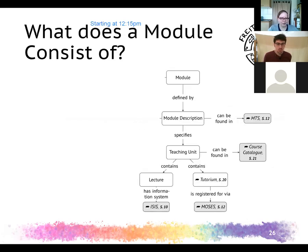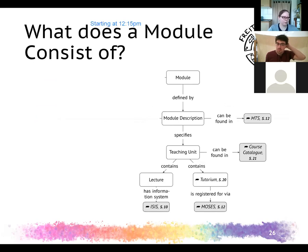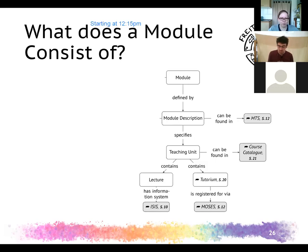Many modules have lectures and tutorials or exercises. For lectures we use ISIS — an information system named after the Egyptian goddess — which is where you get all course materials and current information. You might notice a theme: Moses and Isis. They like Egypt. Tutorials are typically registered via Moses.